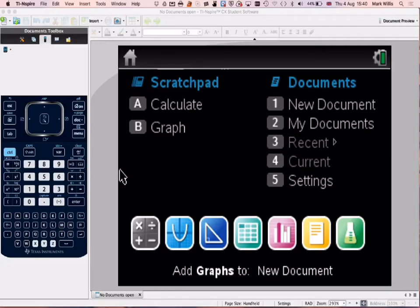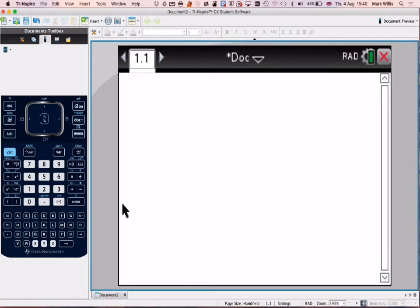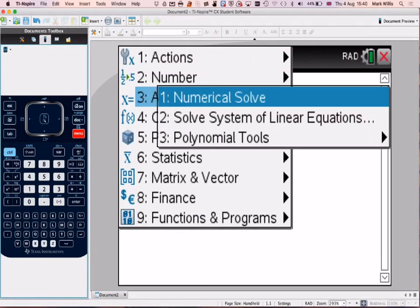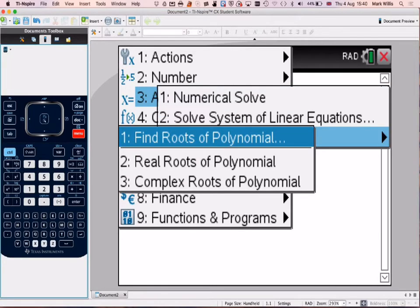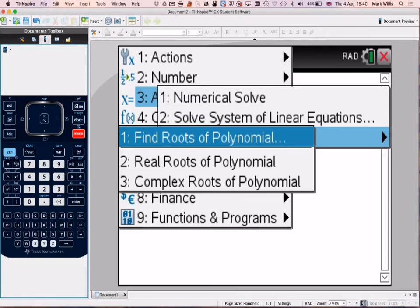So going to my GDC, first of all, we'll create a number. Okay, and then go to menu, number 3, algebra, and then we're going to go to number 3, polynomial tools, and it comes up find roots of polynomials. Just go to the first one.